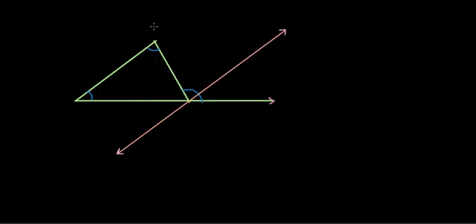To prove this, let's do some constructions. First of all, I will name the given triangle as triangle ABC. Let's name this point as D so that we have the exterior angle as angle ACD, and let's name this line as PQ.